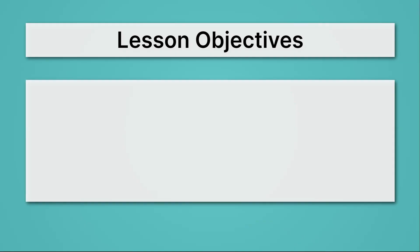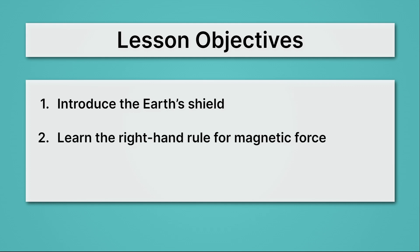Let's begin by reviewing our lesson objectives. First, we'll introduce the Earth's shield, which protects us from this onslaught of radiation. Then, we'll learn the right-hand rule for the magnetic force. Basically, the right-hand rule will tell us what direction the magnetic force is going to be in. And then, we'll apply the right-hand rule to the Earth's shield so that we can actually see the direction of the magnetic force.